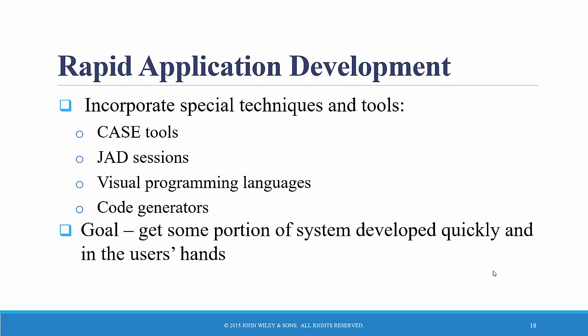The fourth methodology or approach to develop information systems we are going to look at is so-called Rapid Application Development, sometimes called RAD. As the name suggests, it is a rapid development process. It's in contrast to the first three approaches we just looked at — Waterfall, Parallel, and V — which are structured approaches.